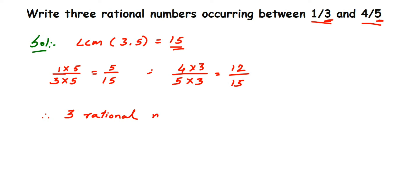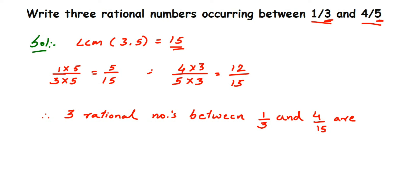Three rational numbers between one by three and four by five are six by fifteen, seven by fifteen, and eight by fifteen. You can pick any three. I hope this question is pretty clear. In case you have further questions or doubts, you can drop a comment below. Thank you so much for watching.